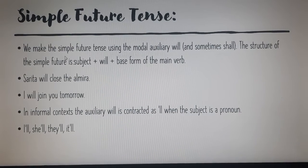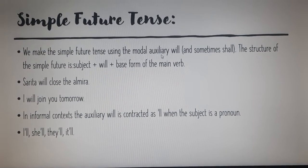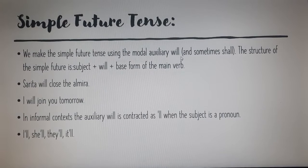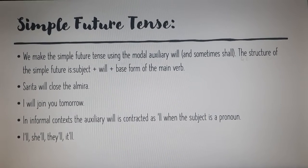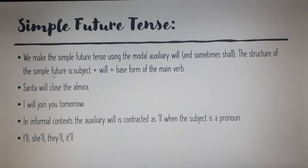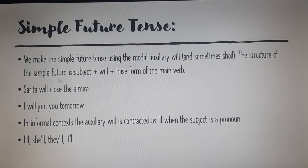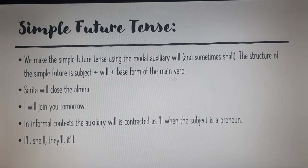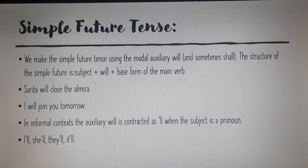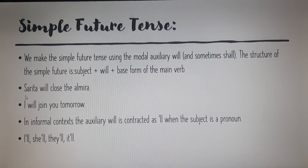We make the simple future tense using the modal auxiliary 'will' and sometimes 'shall'. The structure of the simple future is: subject plus 'will' plus the base form of the main verb. Here are some examples.